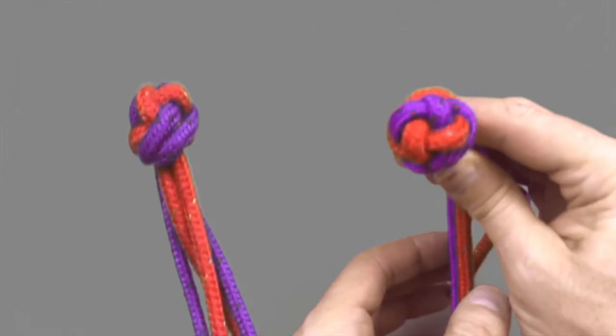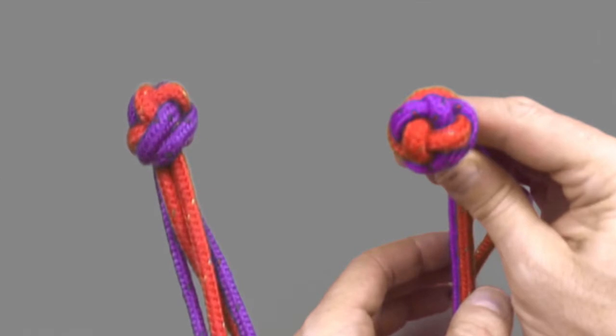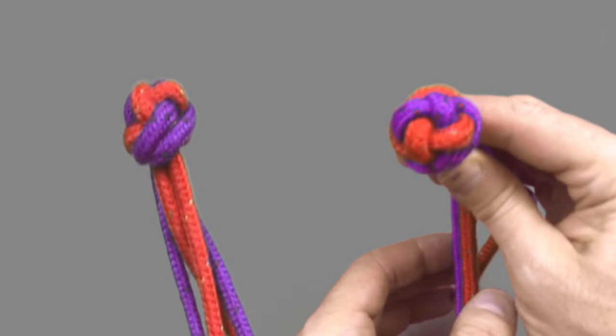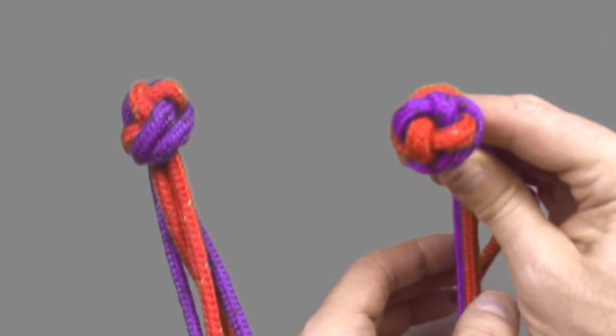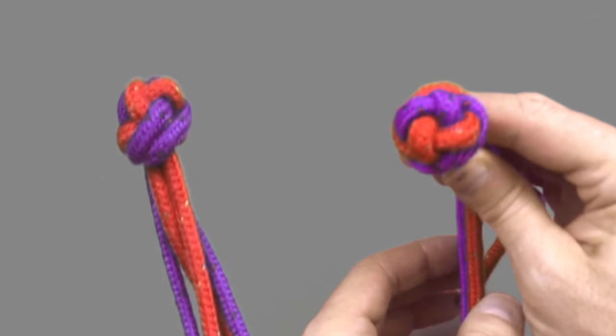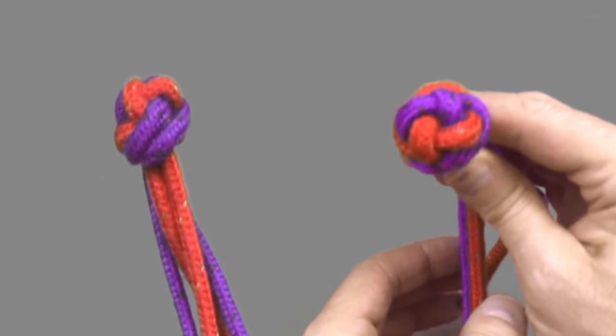In today's demo we are going to use two different colored ropes to make it easier to see how the knot develops. This knot is put together as a combination of two knots, the wall and the crown knot. So if you know how to tie either of those knots it should help you as we move through this demo.